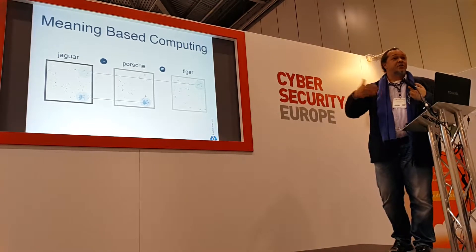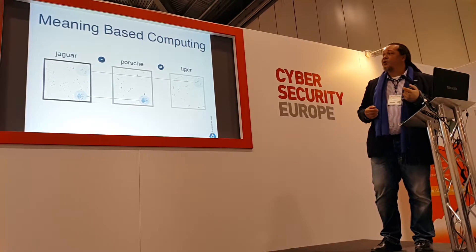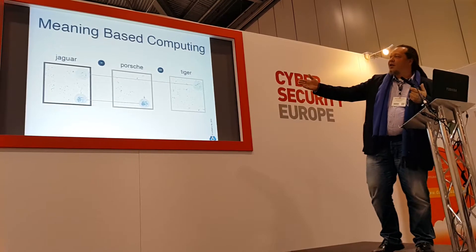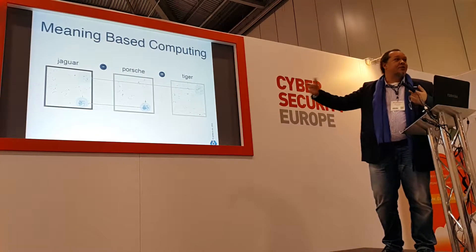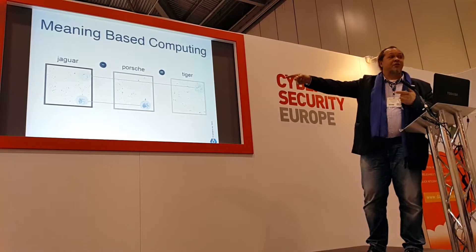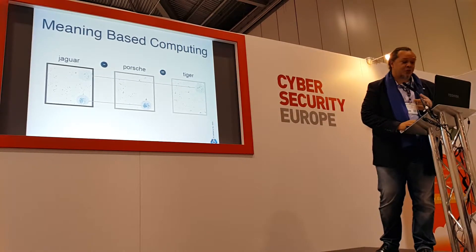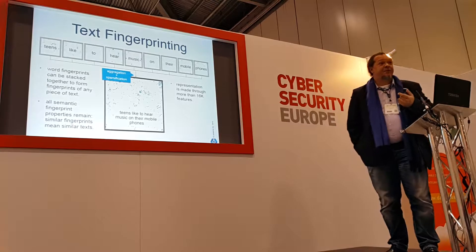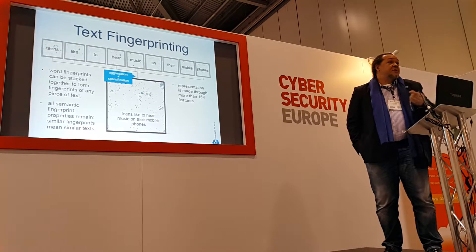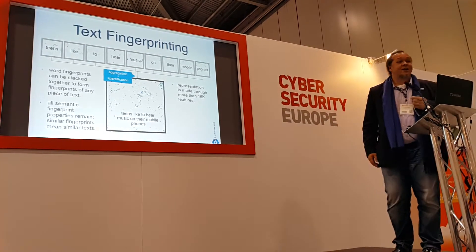Based on these Boolean operations is what we call meaning-based computing. I can say Jaguar minus Porsche equals Tiger — I take away all the Porsche dots, the ones corresponding to a fast and expensive car, from the word Jaguar, and what remains is basically the big cat aspects of the word. The next step is to apply this whole concept to sentences, paragraphs, texts, books, libraries — whatever you want.